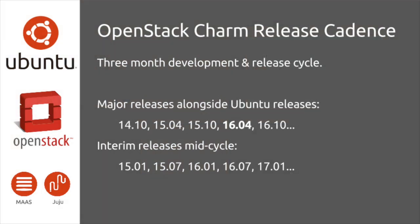The release cadence of the OpenStack charms used to be in line with the Ubuntu release cadence, which is every six months. We now have an interim release every three months. We just put out 1507 - the OpenStack charms and bundles. Pretty soon you'll have 1510 out, just around the corner, followed by an interim release in January of 1601, and then the big one - X - coming around the corner as the LTS.